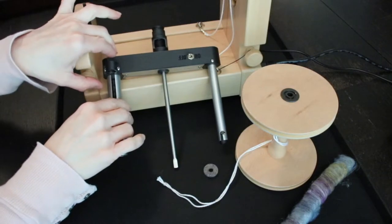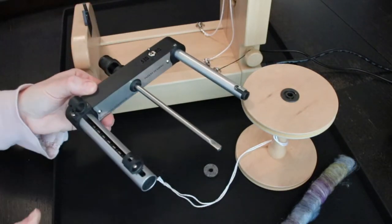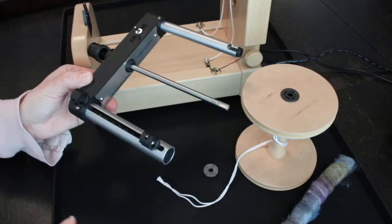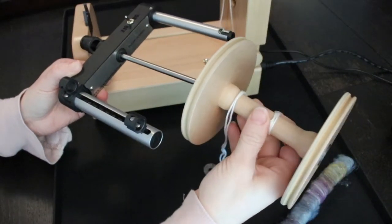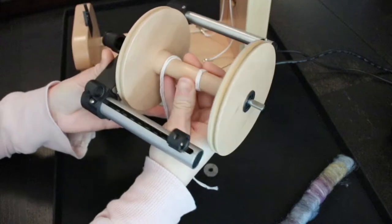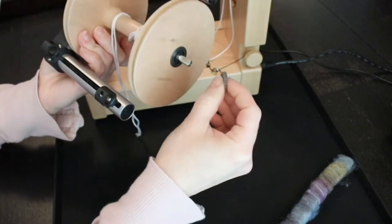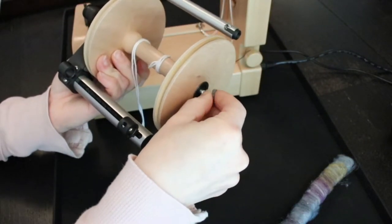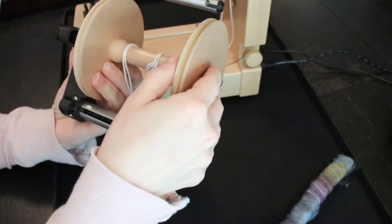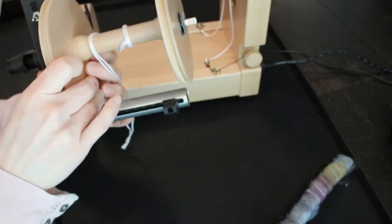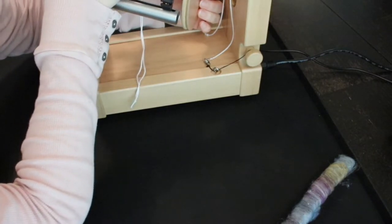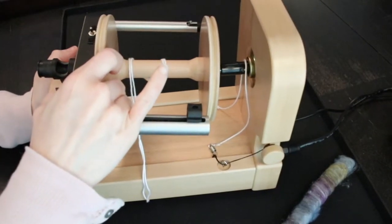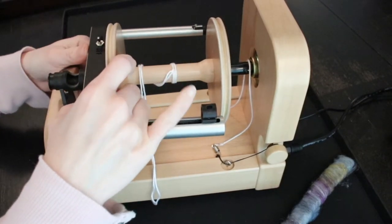Here's how to install the auto winder flyer on the Ashford East spinner 3. I'm going to slide my bobbin onto the flyer, add my felt washer, and slide it into my machine.